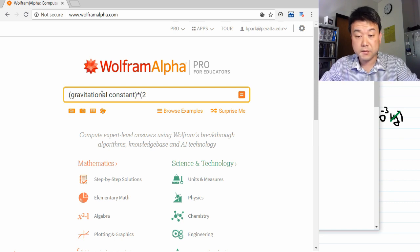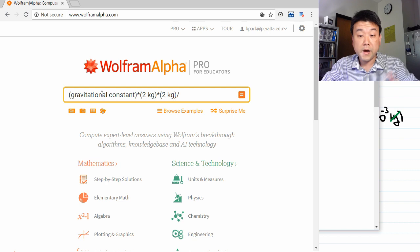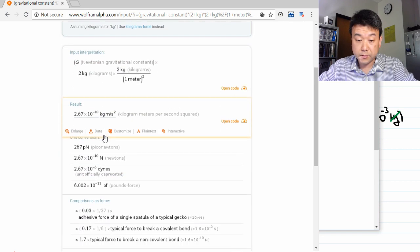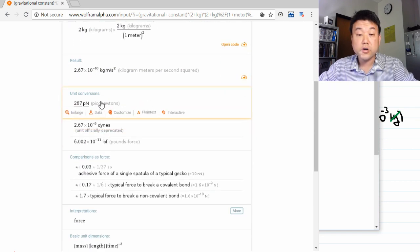Times the masses. 2 kg times 2 kg, and then the distance, divided by the distance, or in this case, 1 meter squared. Let's see what we get. It's the same answer we got, or in piconewtons, 267 piconewtons.